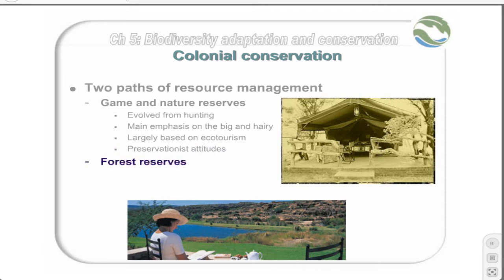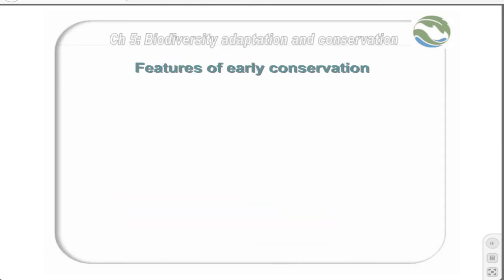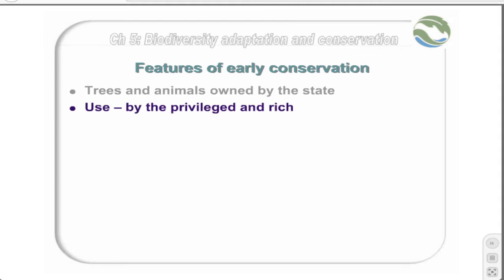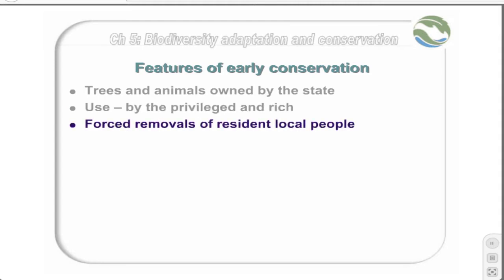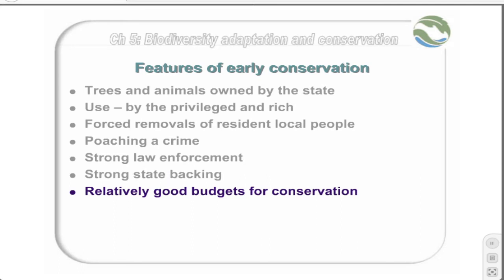Throughout the sub-region there were common trends in early conservation. The valuable trees and animals were owned by the state, and their use was primarily for the privileged and the rich. Forced removal of local resident populations was common, and poaching was considered a crime. There was strong law enforcement and strong state backing, and relatively good budgets to support conservation initiatives.